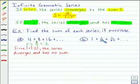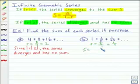For letter b, again, we can find r by dividing 1 fifth by 1. That gives us 1 fifth. So the absolute value of r is less than 1. We can find s by using our formula, where a sub 1 is 1, and r is 1 fifth. So this gives us 1 divided by 4 fifths, which equals 5 fourths for the sum.